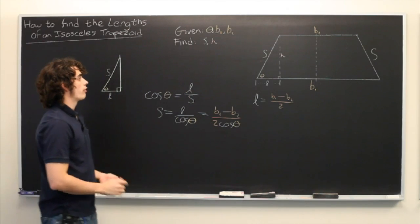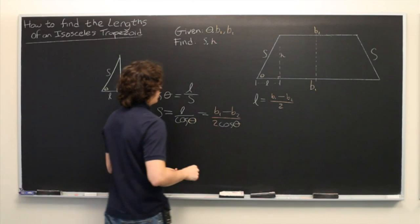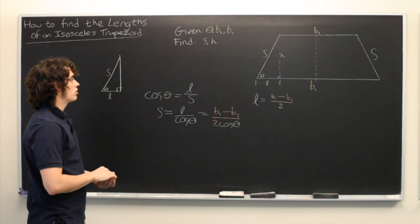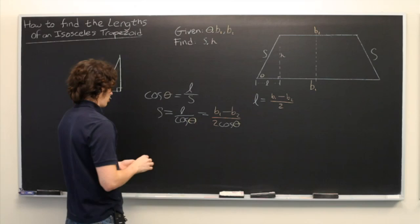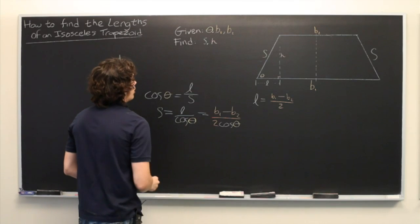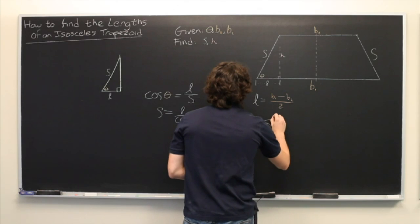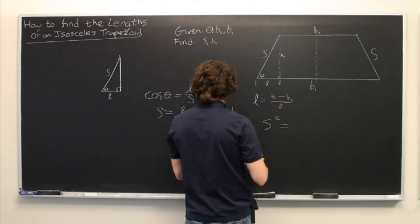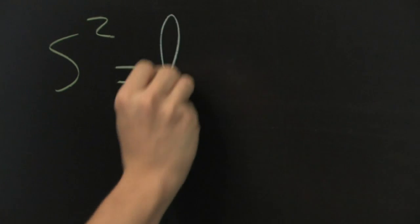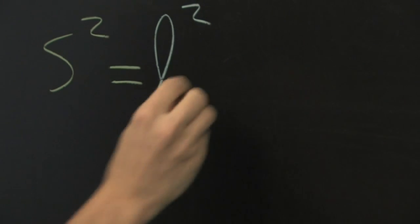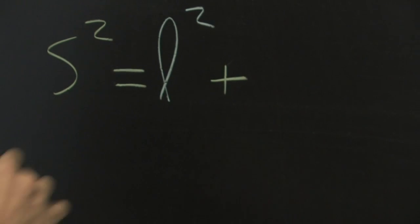Lastly, we need to solve for the height, H. From here, we can simply do this using the Pythagorean theorem. We recall that S squared is going to be equal to L squared plus H squared.